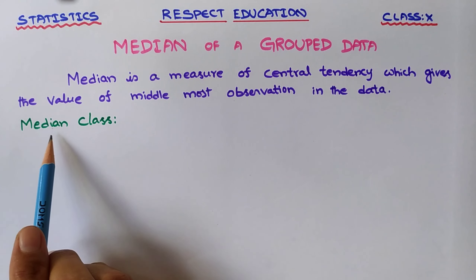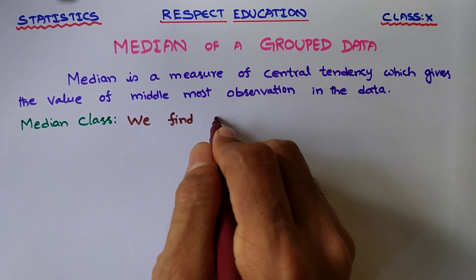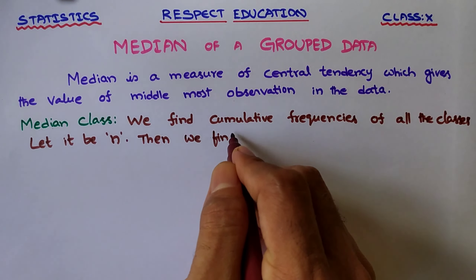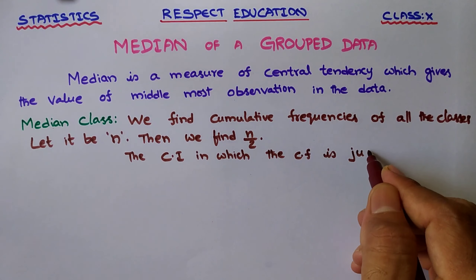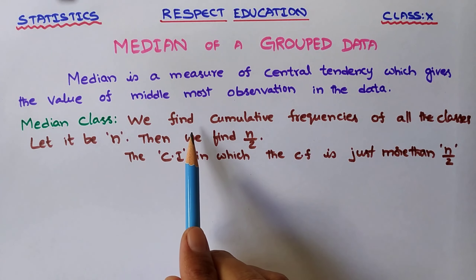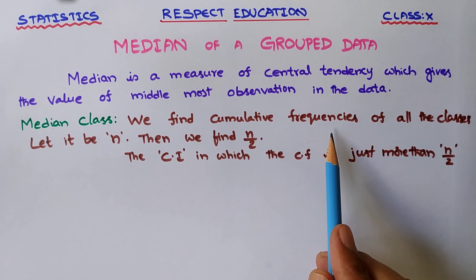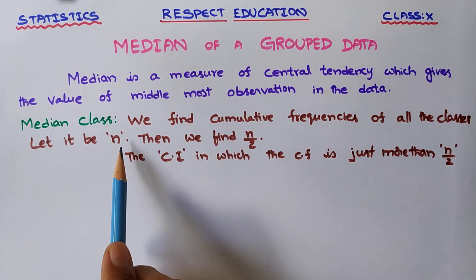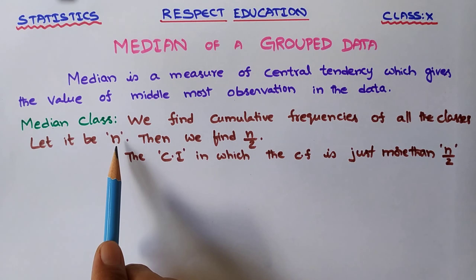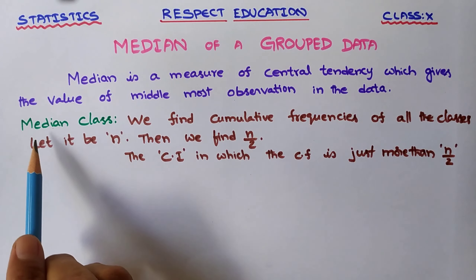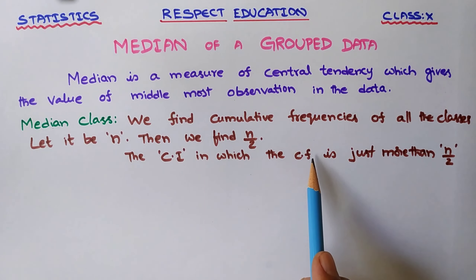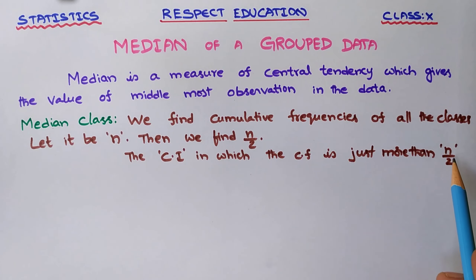Now we see what is a median class. We find cumulative frequencies of all the classes, let it be n. That means n indicates the sum of the frequencies. Then we find n by 2. The class interval in which the cumulative frequency is just more than n by 2.